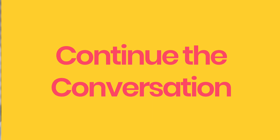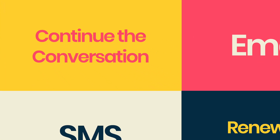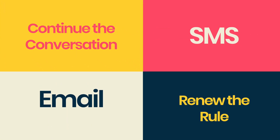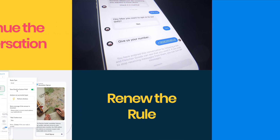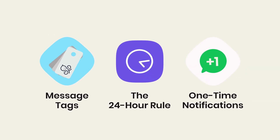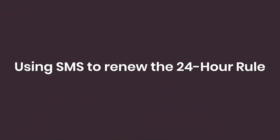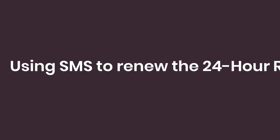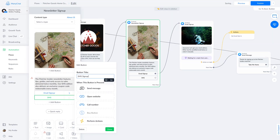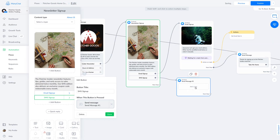To help continue your conversation and renew the 24-hour rule, we suggest trying SMS and email. Note: if you haven't checked out the videos on message tags, 24-hour rules, or one-time notifications, do so now. Now let's get started — using SMS for re-engagement can be a very powerful tool.